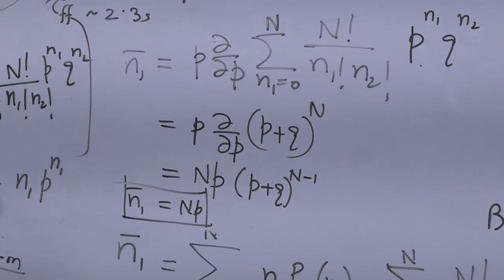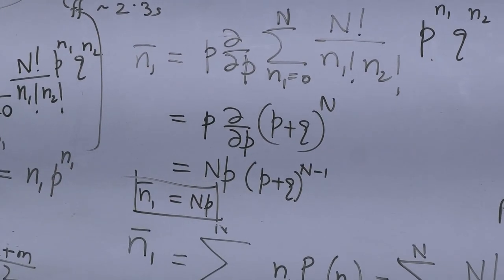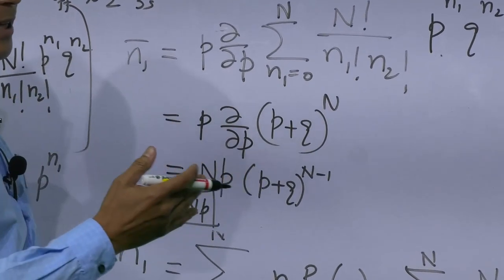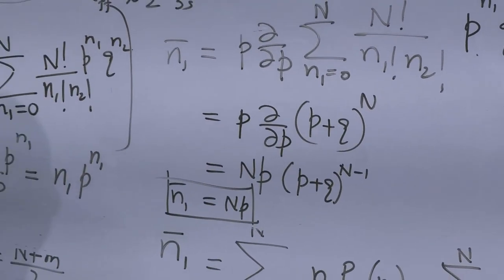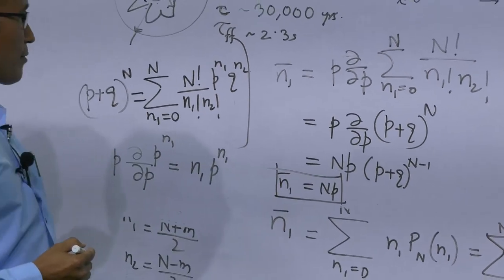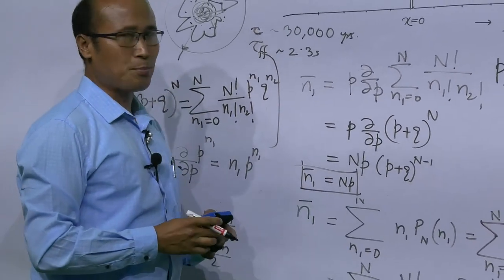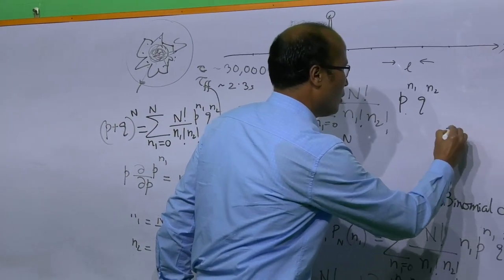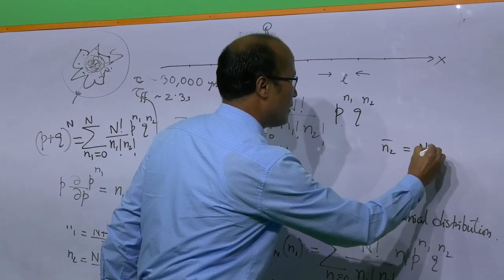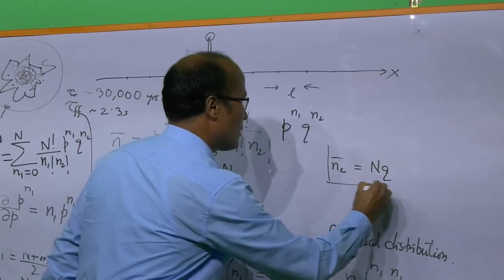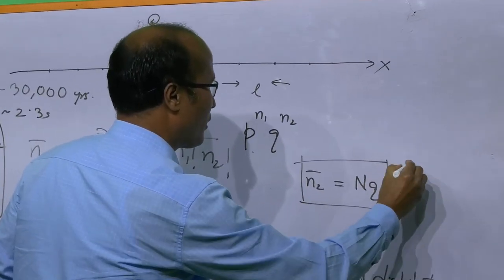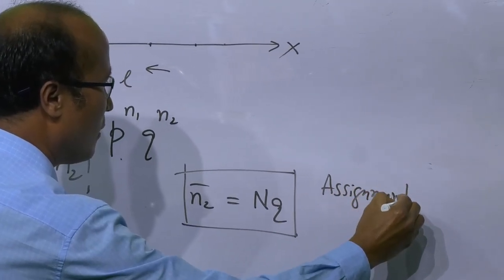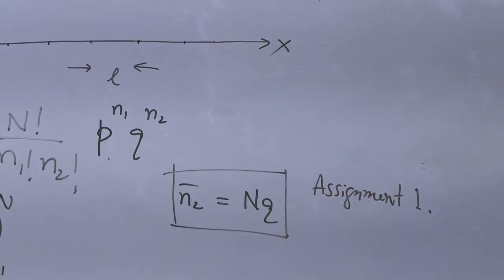So the mean of N1, the number of steps taken towards the right out of a total of N steps, is N times P. For N2_bar, we must get N times Q. You can calculate this as assignment number 1.